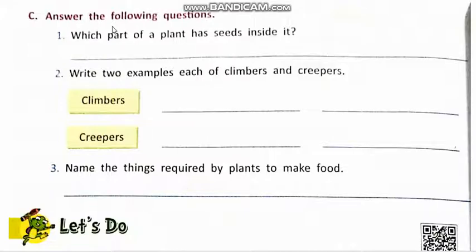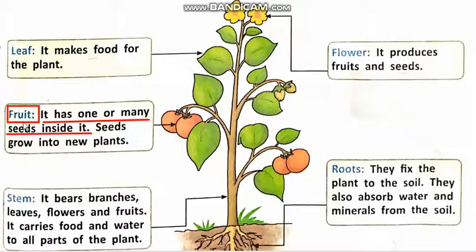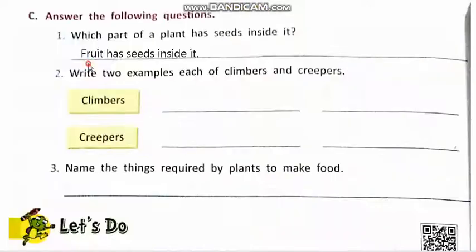C. Answer the following questions. Number 1. Which part of the plant has seeds inside it? Abhi hamna padha hain — fruit has seeds inside it. Fruit, it has one or many seeds inside it. Fruit ke andar seeds hoti hain. Fruit has seeds inside it.